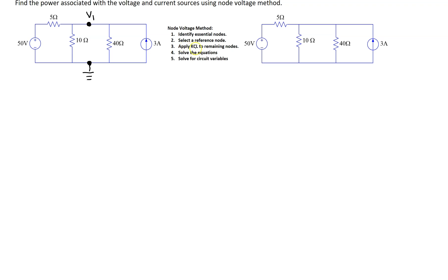In order to apply Kirchhoff's current law, first we need to denote the branch current directions. A systematic way of doing that is to assume all branch currents are leaving the node. At this node we have four branch currents and we can set them all as leaving the node. Kirchhoff's current law says the sum of currents leaving a node equals the sum of currents entering a node. Now we are ready to write the node equation at node 1.